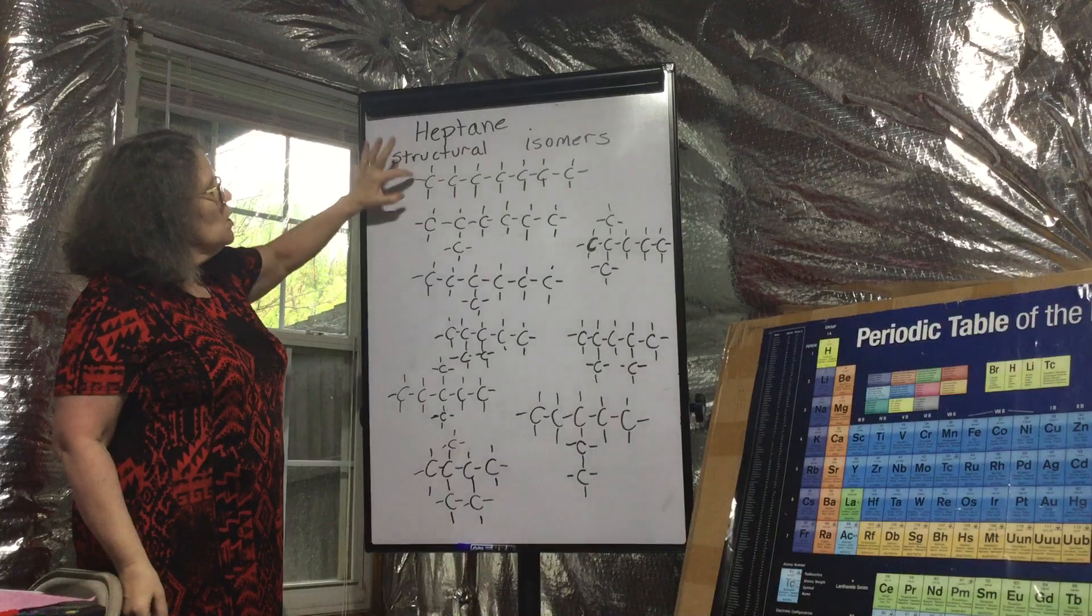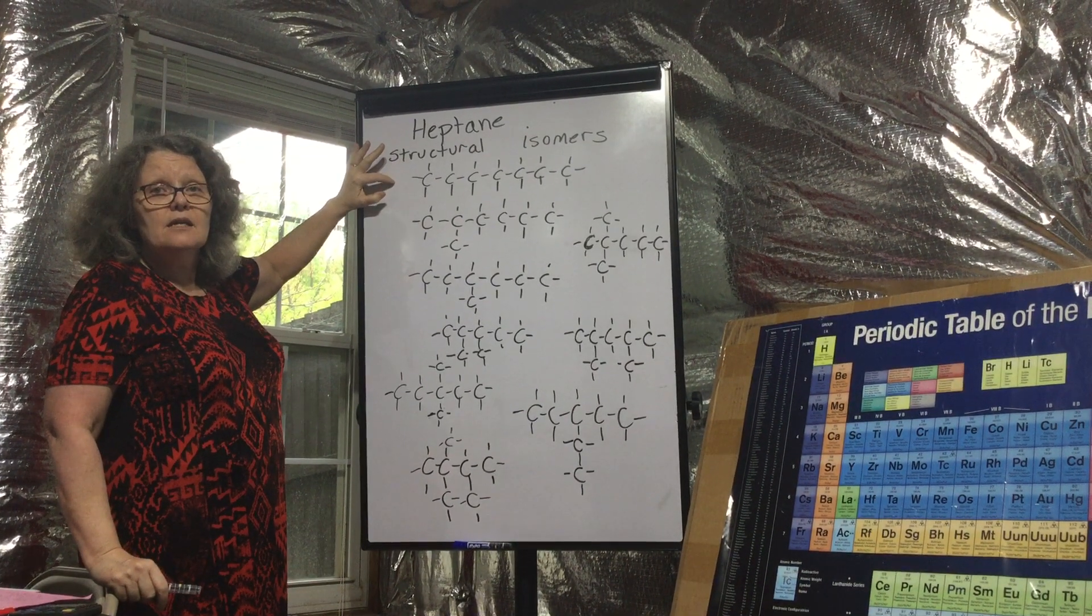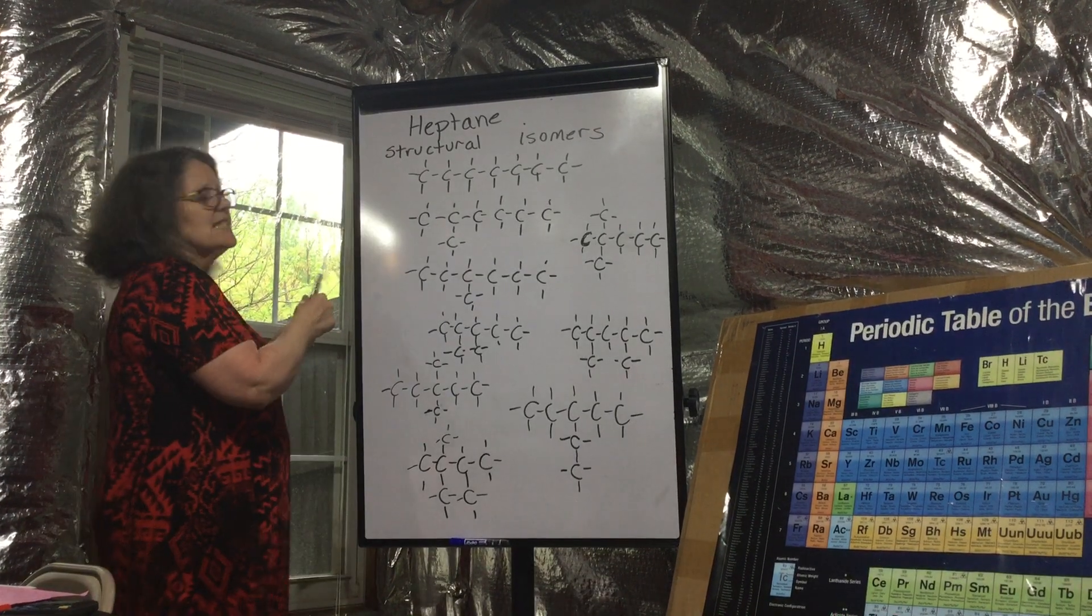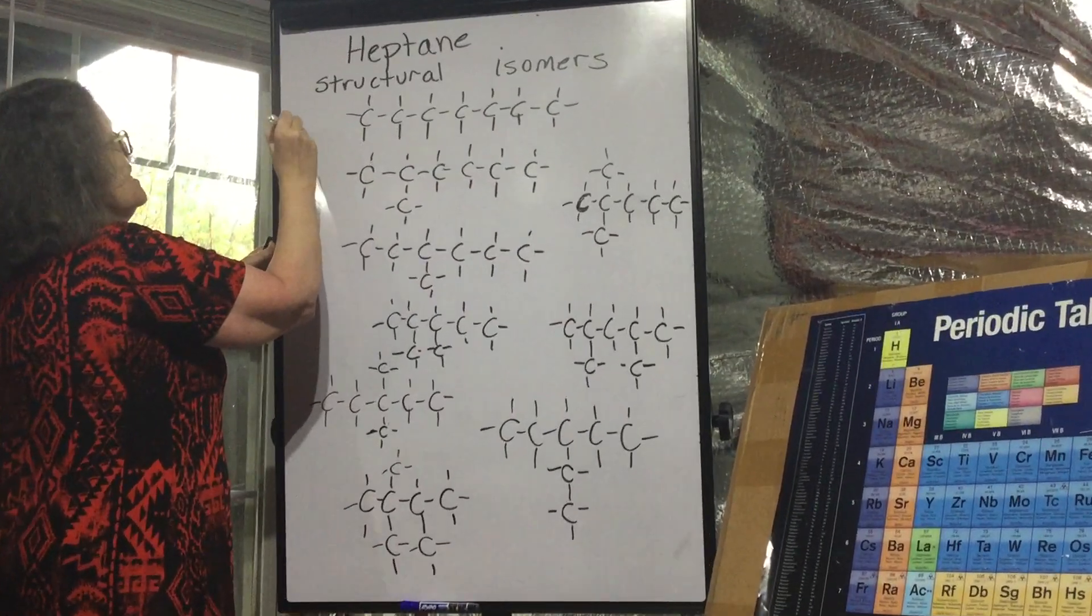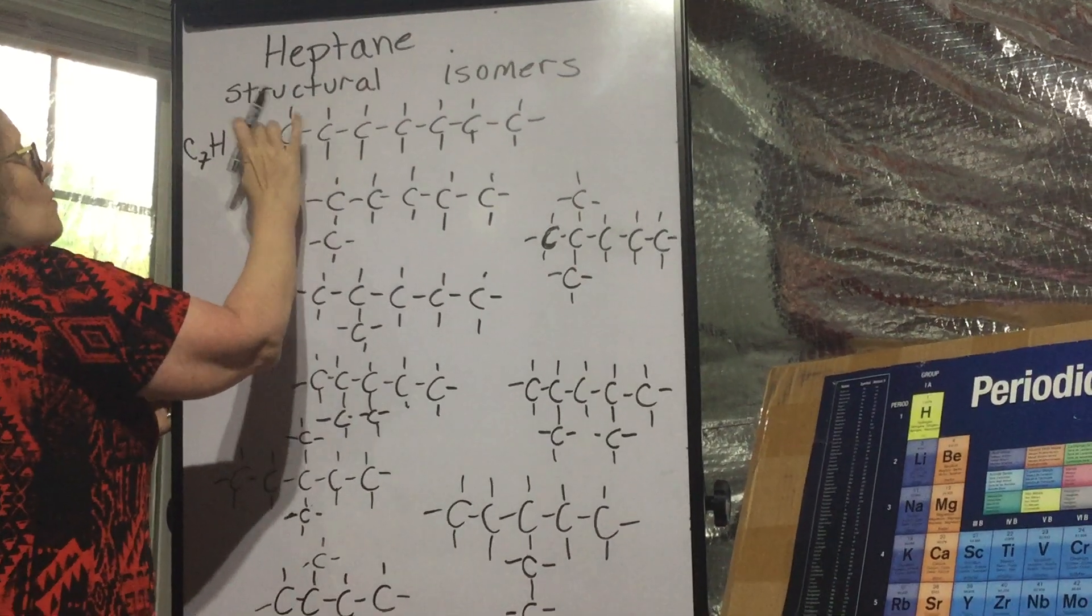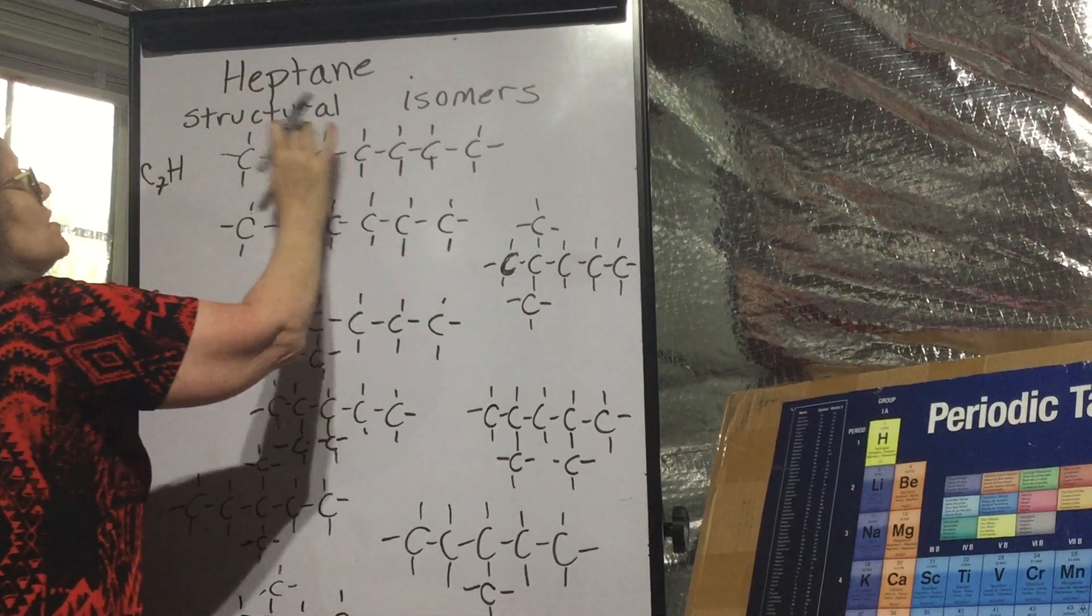I started off with a seven carbon chain, this is an alkane, heptane. It has, let's count, 1 2 3 4 5 6 7, C7H, 1 2 3 4 5 6 7 8 9 10 11 12 13 14 15 16.